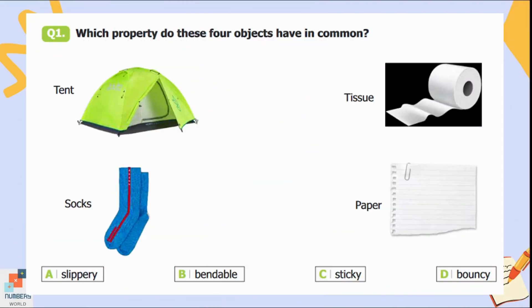Number one: Which property do these four objects have in common? The objects are tent, tissue, socks, and paper. Option A is slippery, option B is bendable, option C is sticky, and D is bouncy. Option B is the correct answer because all these objects are flexible and we can bend them easily.